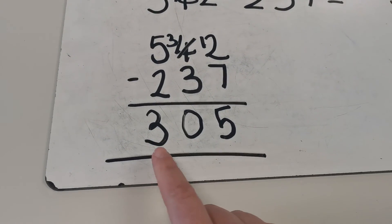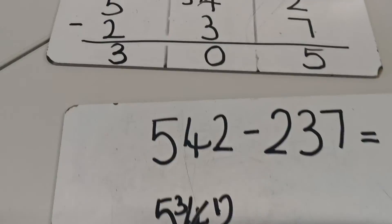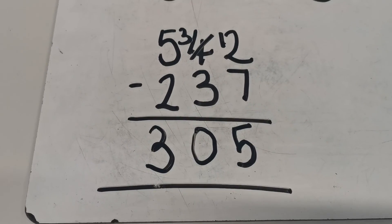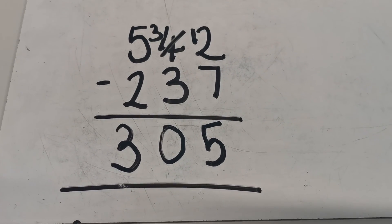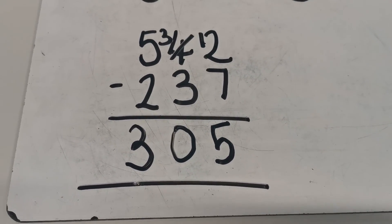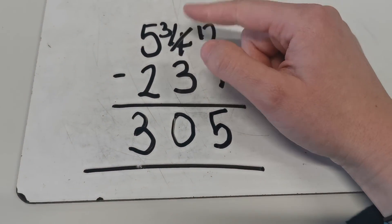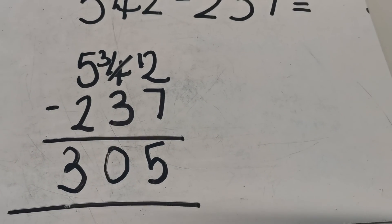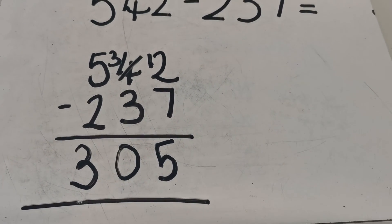So just like my place value chart, I have 305. I also have 305 in my written method. So just make sure that you're exchanging today, so you're going to be exchanging a ten for ten ones in all of your questions. I hope that makes sense. Take care, see you later, bye.